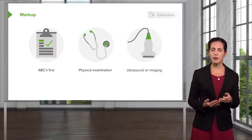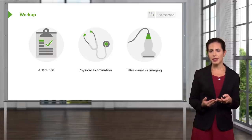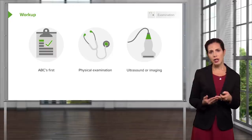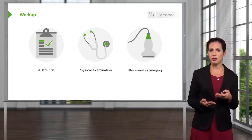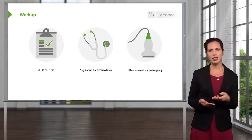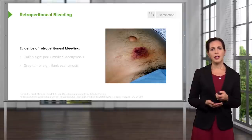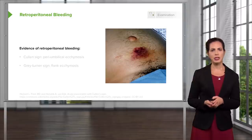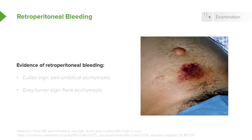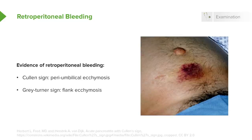You also want to think about ultrasound or imaging. In the emergency department, there are readily accessible ultrasound machines that can be brought right to the bedside for a quick, rapid, and easy look at the patient's aorta. Other things you can see on physical examination are evidence of retroperitoneal bleeding, since the aorta is a retroperitoneal organ. Cullen sign is periumbilical ecchymosis — a bruise around the belly button. Gray-Turner sign is ecchymosis in the flank or back area. This illustrates the importance of taking a good look at your patients.